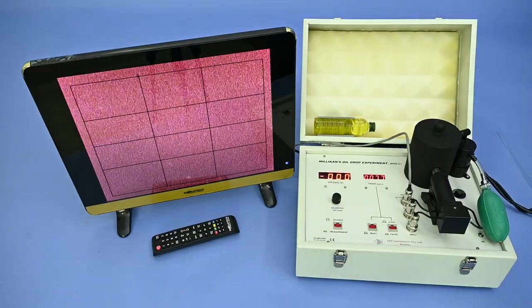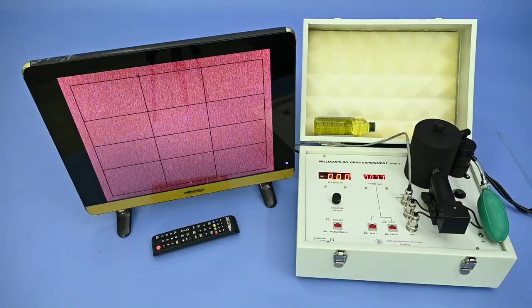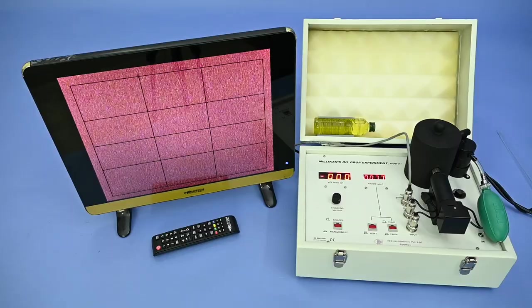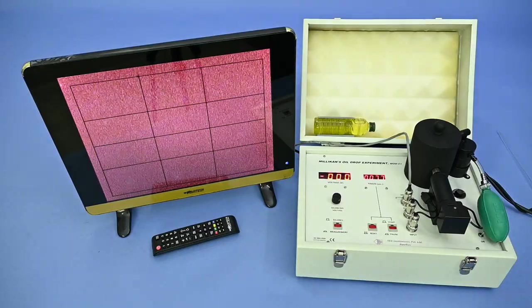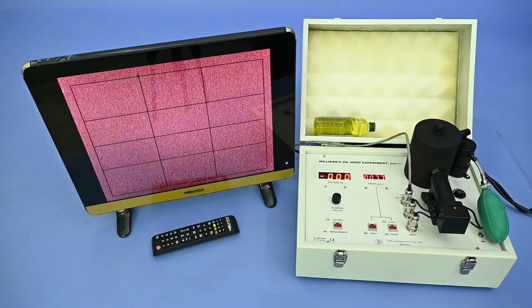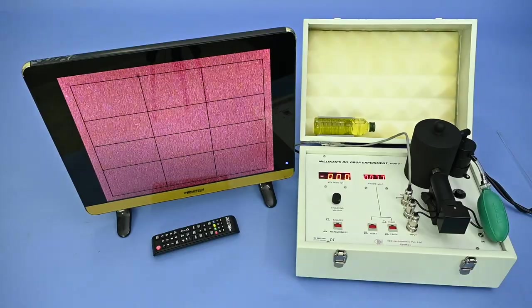Reset Timer button should be pressed before any new reading. Repeat 5 sets of readings for each droplet and total 5-6 drops should be selected for better average. Tabulate these readings.